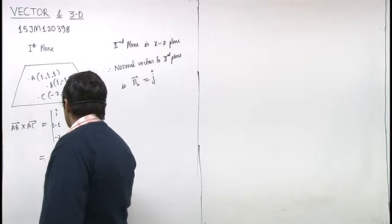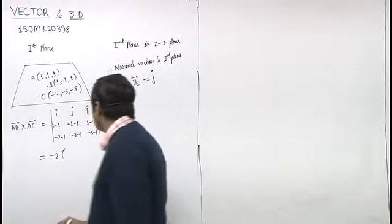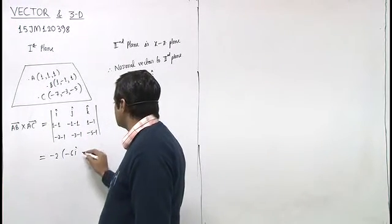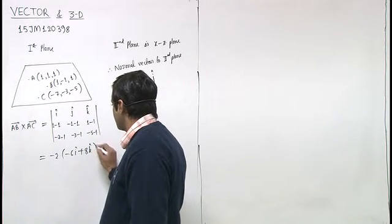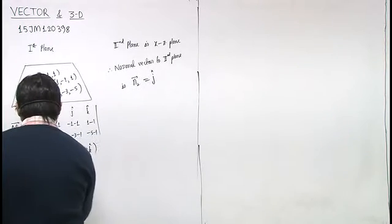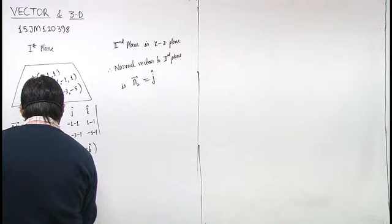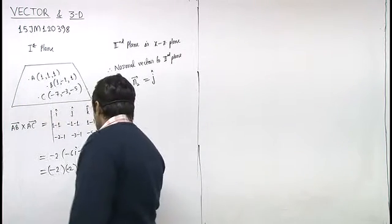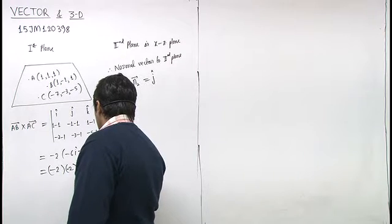So this is minus 2 into minus 6 i cap minus 4 k cap. This is minus 2 into minus 2 into 3 i cap minus 4 k cap.